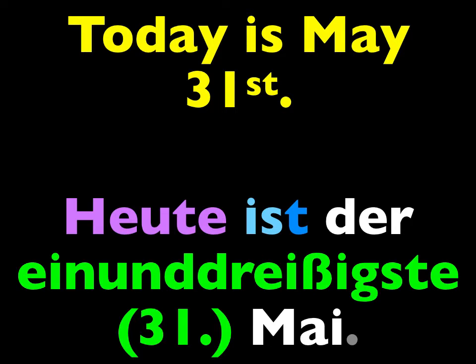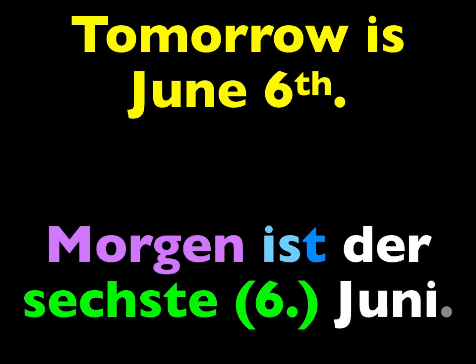To practice the remaining six months with a date, we'll say something slightly different. For the rest, I want you to say tomorrow instead of today. Tomorrow is a given date, as in this example: Morgen — that's the word for tomorrow — morgen ist der sechste Juni. Tomorrow is the sixth of June, or June 6th. So the remaining ones will all start the same way: morgen ist der, then the ordinal number, then the month. Ready? Let's do the next one.